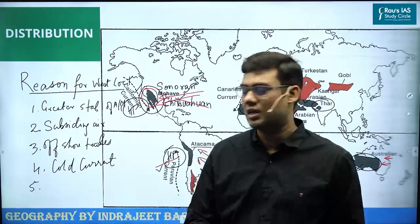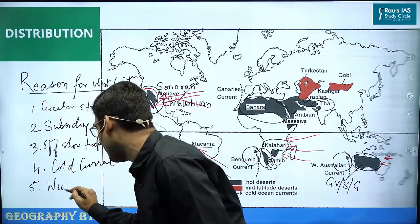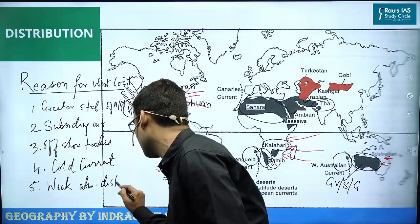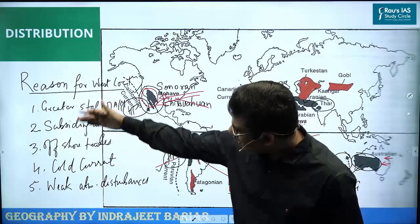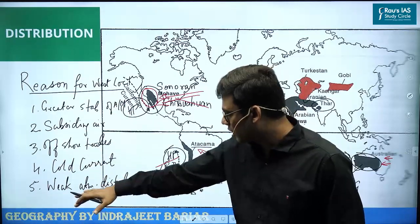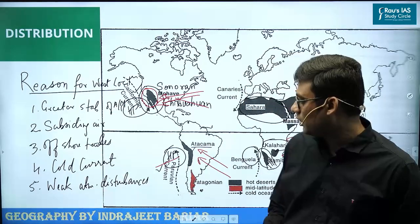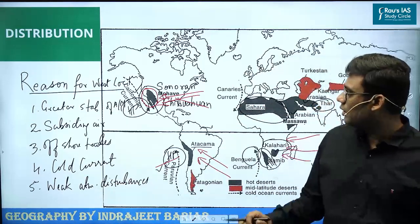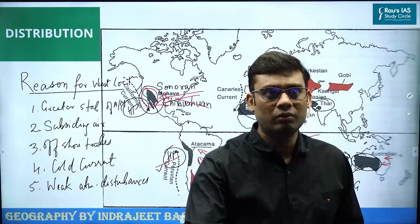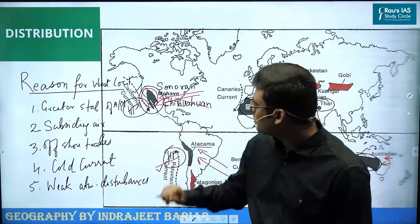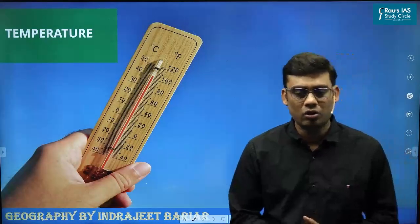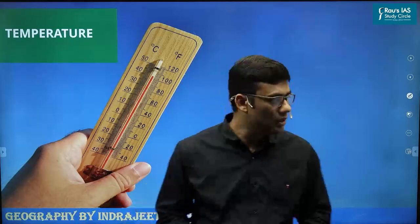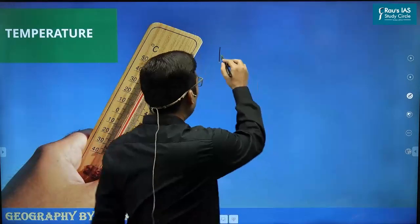So there are four reasons for the western location: greater stability of air mass, subsiding air discouraging rainfall, offshore trade winds, and cold ocean currents. Weak atmospheric disturbances are also a valid reason, though it is largely a result of the above factors. This concludes the distribution aspect. Now let's talk about the temperature aspect of this climatic belt.